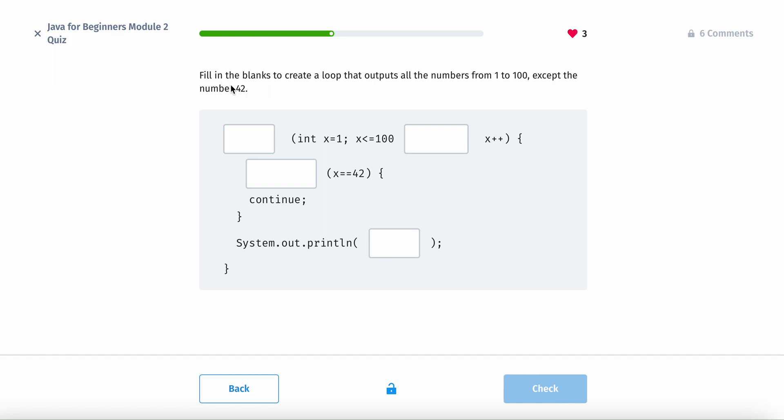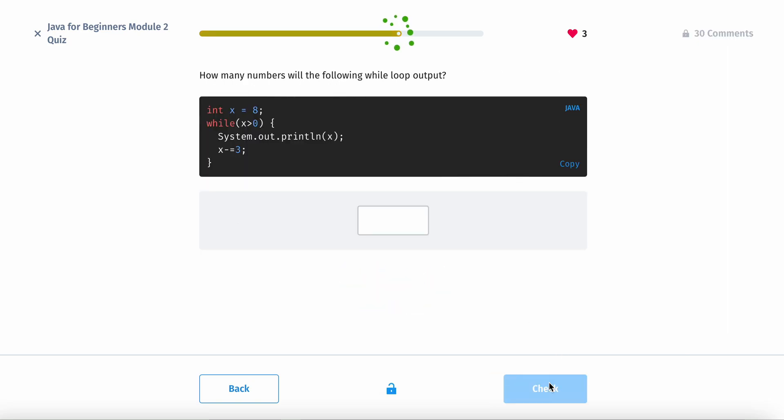Now, this is fill in the blanks to create a loop that outputs all of the numbers from 1 to 100, except the number 42. So I don't know what 42 did, but we can't output that. So we'll do for, and then right here is a semicolon, and then we'll do an if, and then we'll output x. Perfect.